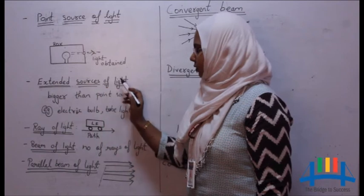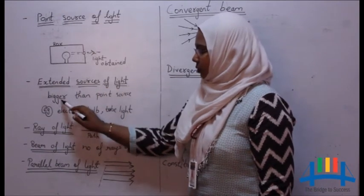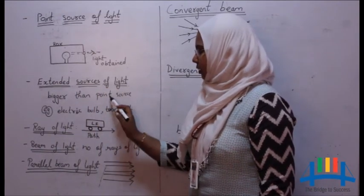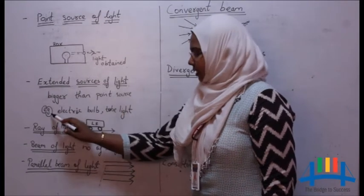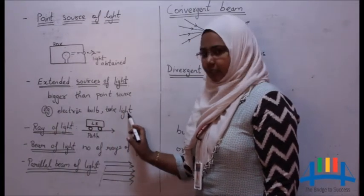Extended source of light: any source of light which is bigger than point source of light is called extended source of light. Example: electric bulb, tube light, etc.